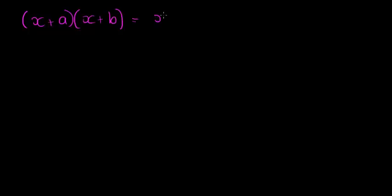When we multiply this out we get x squared plus, and then here we get a plus b times x, and then our constant term was a times b.